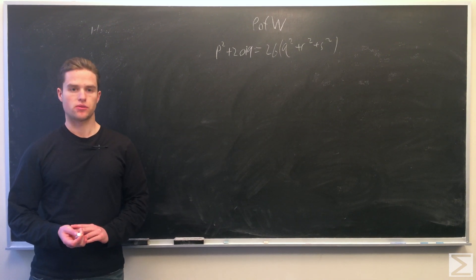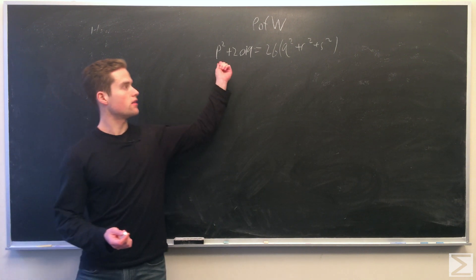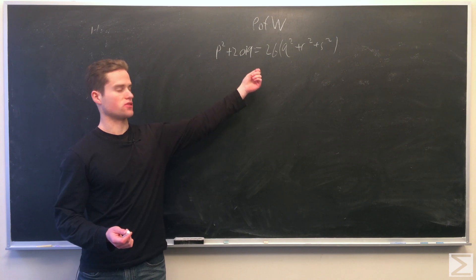Welcome to this week's problem of the week. For this week's problem we want to find integer solutions to p squared plus 2 to 19 equals 26 q squared plus r squared plus s squared.